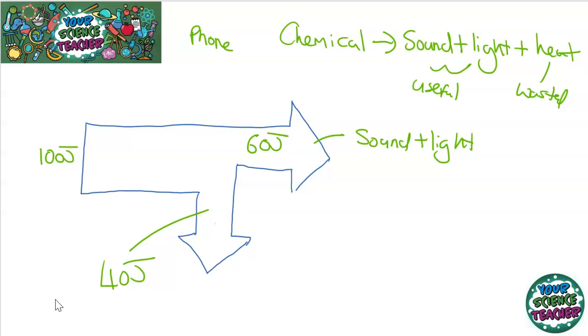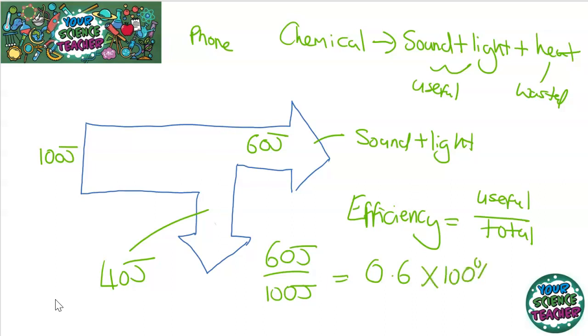Now, from a Sankey diagram, you can also calculate the efficiency of an appliance. To calculate the efficiency, what you need to do is you need to do the useful energy divided by the total energy of the system. So, in this example, it would be 60 joules divided by 100 joules, which would give me an efficiency of 0.6. And you can turn that into a percentage if you would like, or you could leave it like that. To turn it into a percent, all you'd have to do is times it by 100%, which would equal 60%.